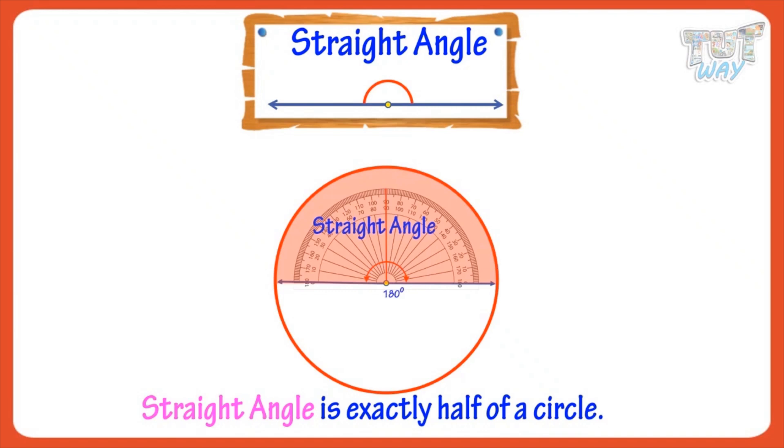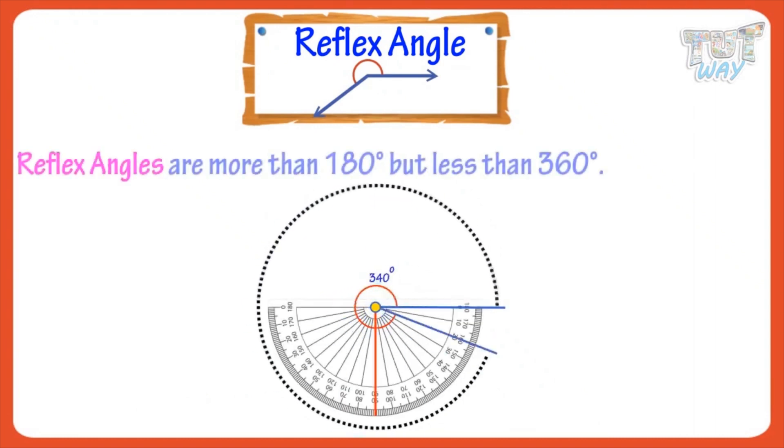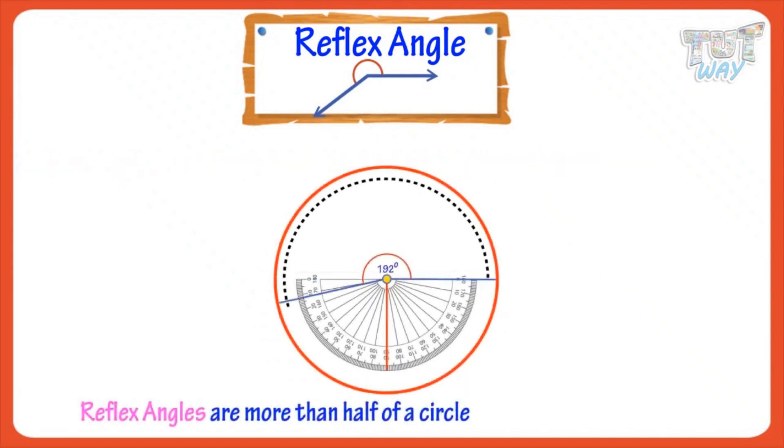Now, let's see what are reflex angles. Reflex angles are more than 180 degrees but less than 360 degrees. So, reflex angles are more than half of a circle and less than a full circle.